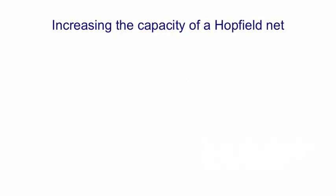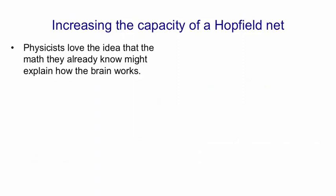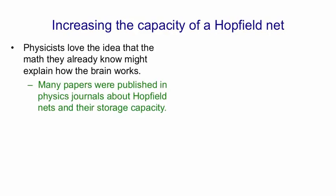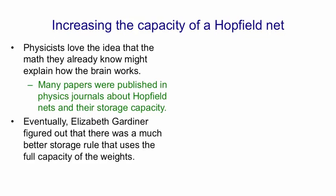Before we get to that, I want to talk about ways that physicists discovered for increasing the capacity of a Hopfield net. As I said, this was a big obsession with the field — I think it's because physicists really love the idea that math they already know might explain how the brain works. That means post-doctoral fellows in physics who can't get a job in physics might be able to get a job in neuroscience. There were a very large number of papers published in physics journals about Hopfield nets and their storage capacity. Eventually a very smart student called Elizabeth Gardner figured out that there was actually a much better storage rule if you were concerned about capacity, and that it would use the full capacity of the weights.